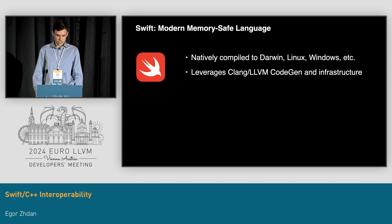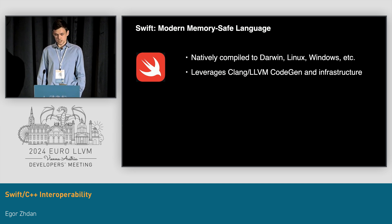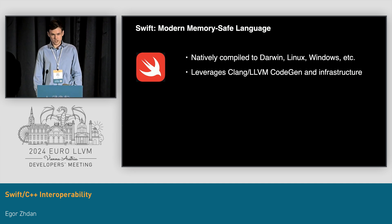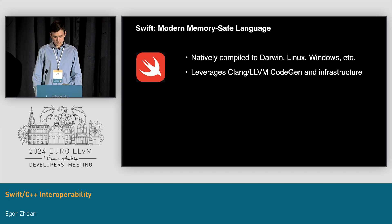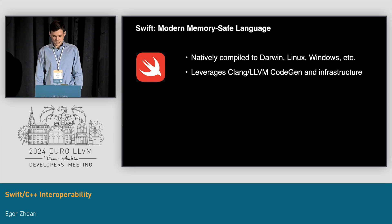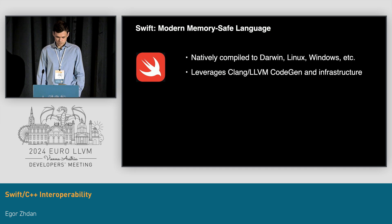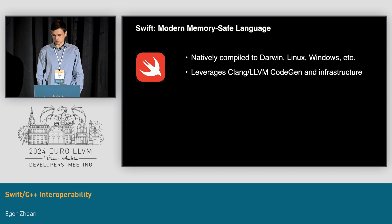Ideally, we would switch to a modern memory-safe language like Swift. Swift was introduced in 2014. It is memory-safe by default. It is natively compiled to many platforms like Darwin, Linux, Windows, and others. Something important for this project and for this conference is that Swift leverages Clang and LLVM for compilation. Swift code is compiled down to SIL, which stands for Swift Intermediate Language, which is then compiled down to LLVM-IR.